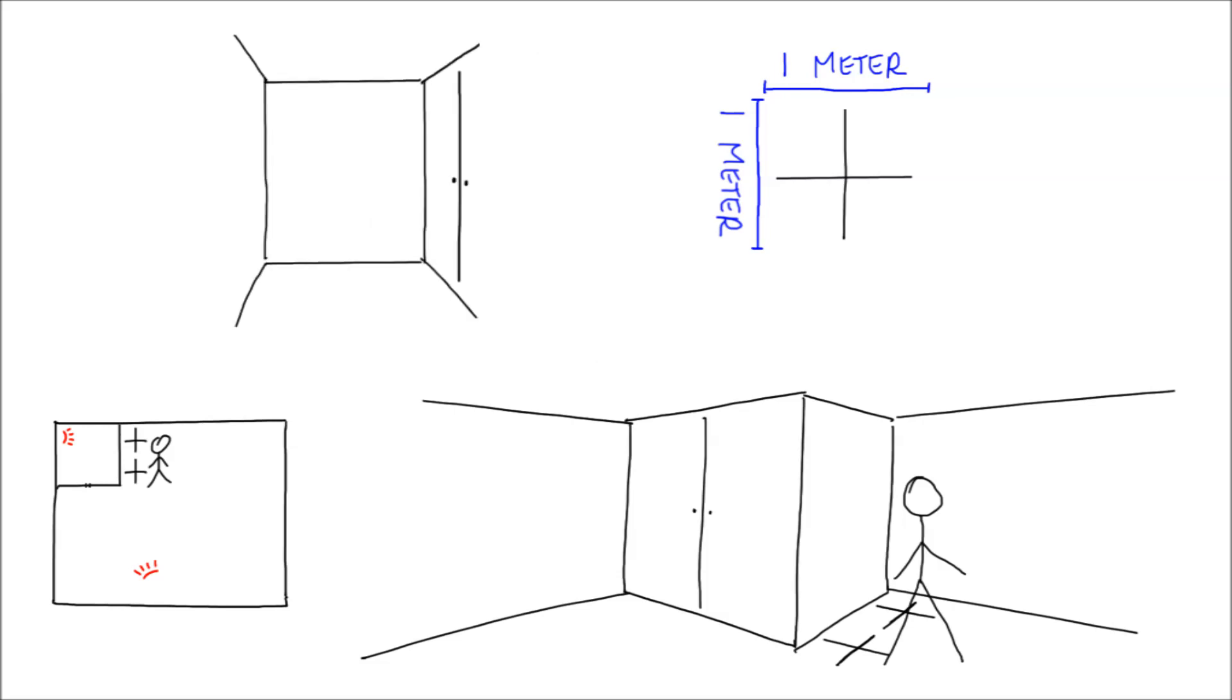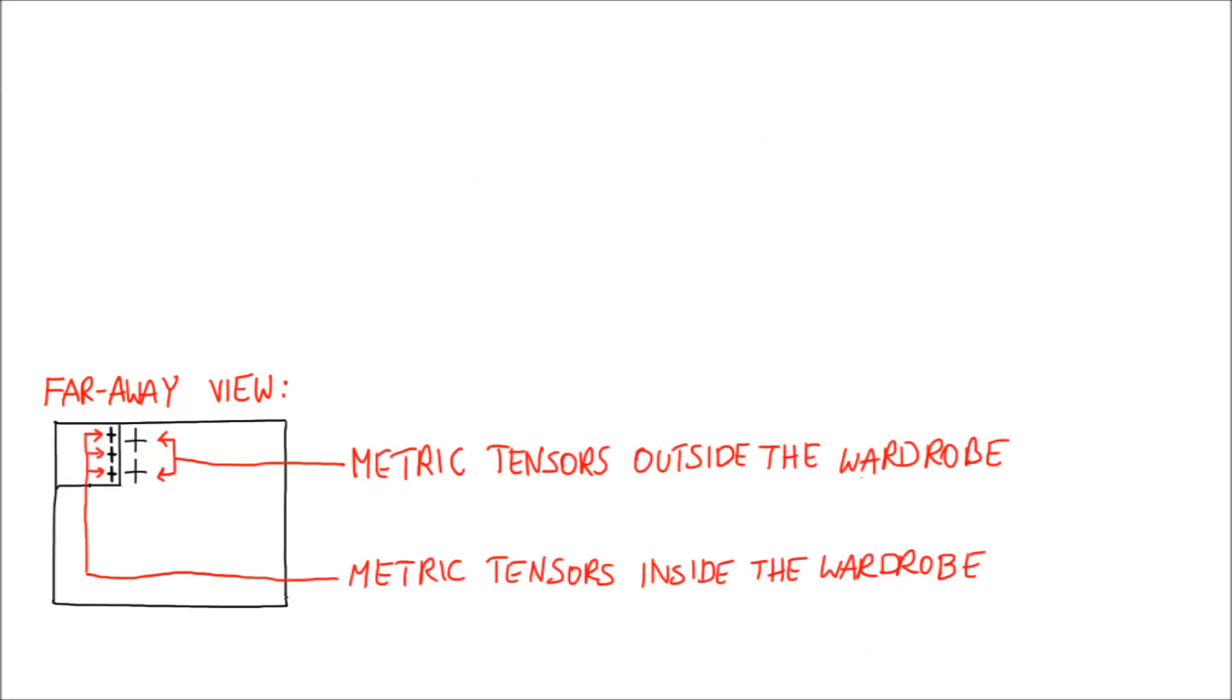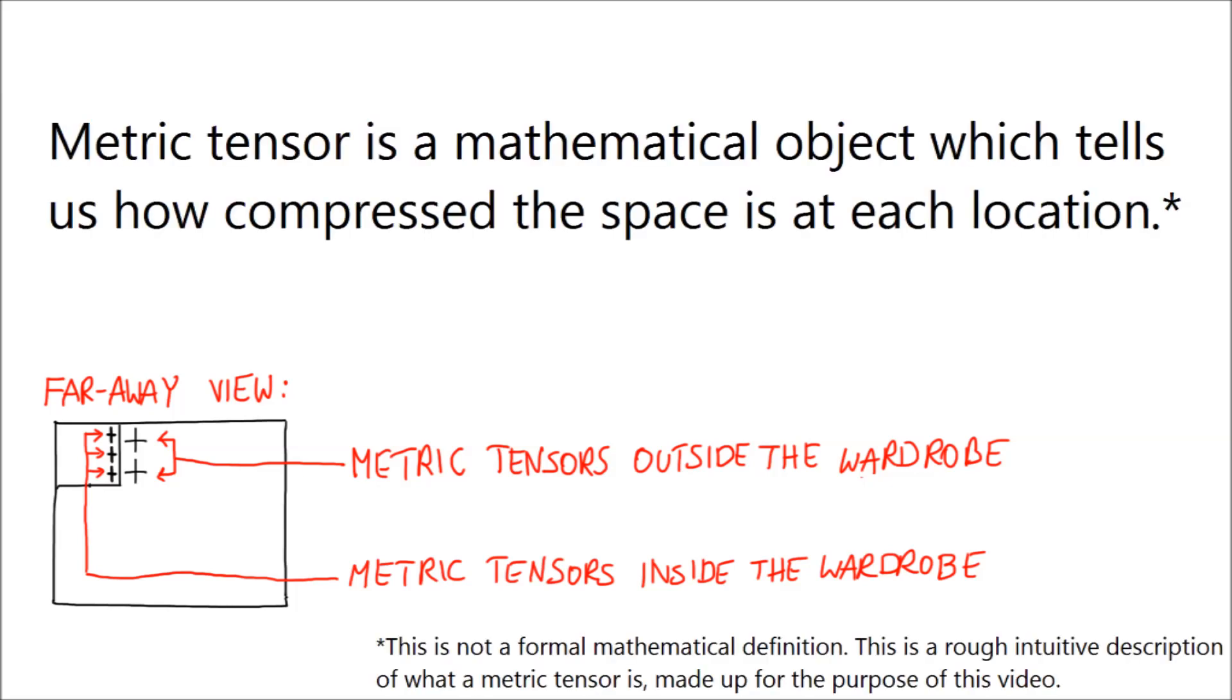Your friend has a slightly cheaper model. His wardrobe is the same outside as yours, but only 4 meters by 3 meters by 4 meters inside, and so the corresponding crosses on his floor plan are squeezed horizontally more than vertically. These are the basic tools we need to investigate curved space. A local view tells you how space looks like from up close. For each local view, the nearby crosses are all the same size, because you can just walk up to them and measure them to be 1 meter long and wide. A faraway view, in this case the floor plan view, simultaneously shows areas where space is compressed differently, and so some crosses seem deformed. A cross on the faraway view represents so-called metric tensor. Metric tensor is a mathematical object which tells us how compressed the space is at each location.